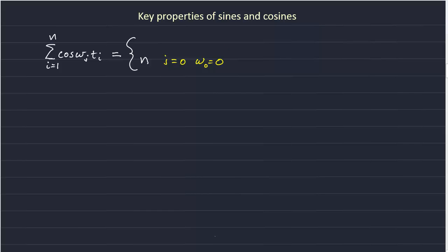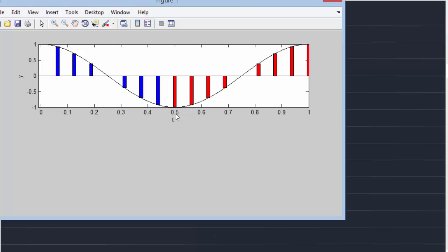Now what happens when j is not equal to 0? So there is a full oscillation. Let's look at a case here.